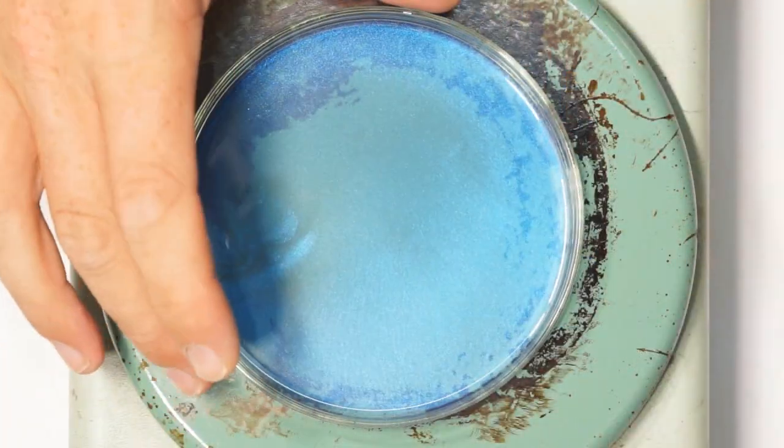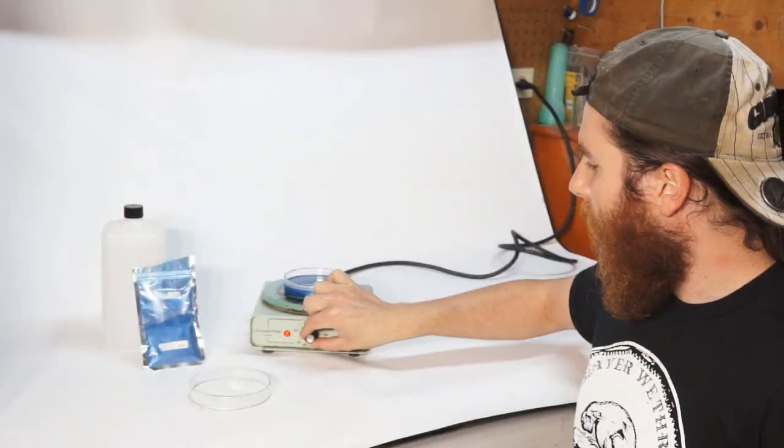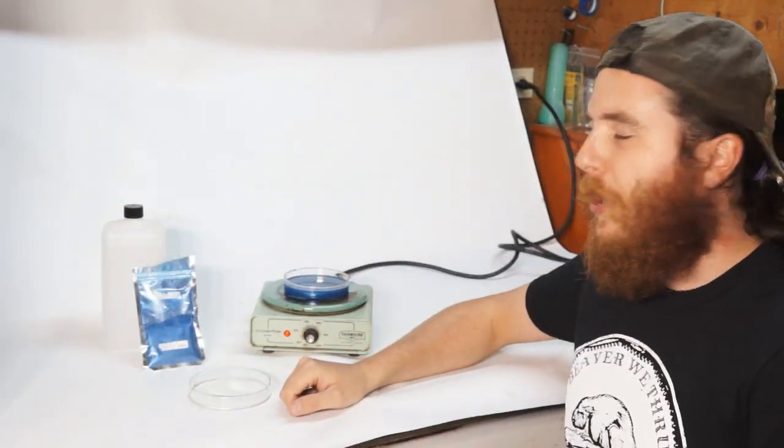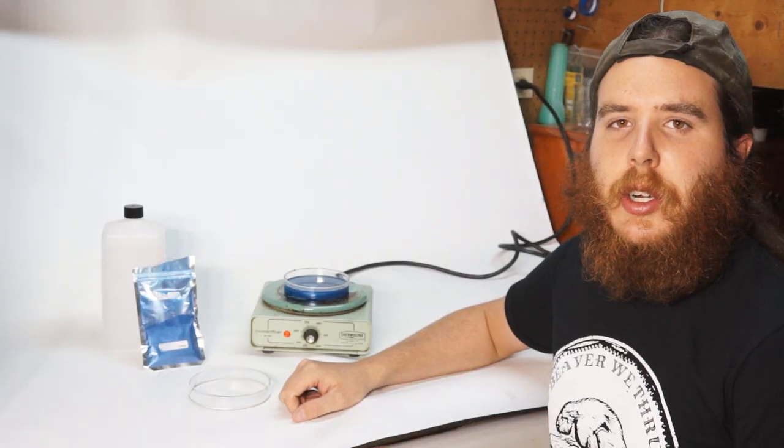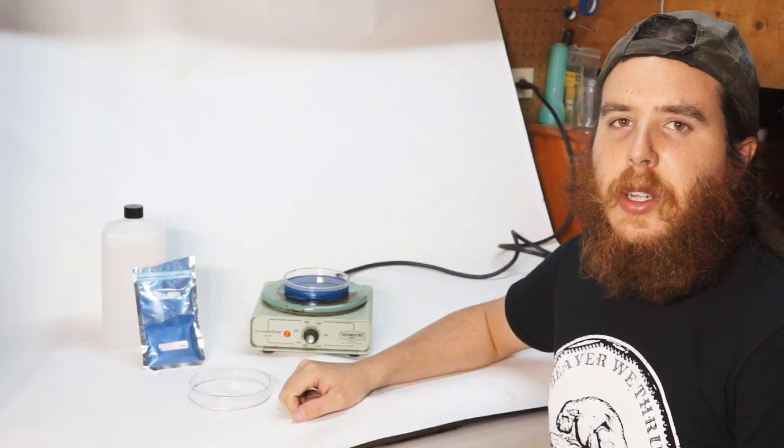The mica powder has nothing to do with the convection cells, but it turns the silicone oil into a rheoscopic fluid. This means, literally, current showing fluid. This will allow us to see the movement of the oil through its entire depth.